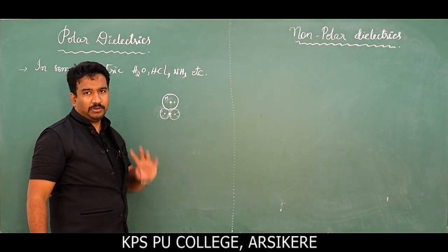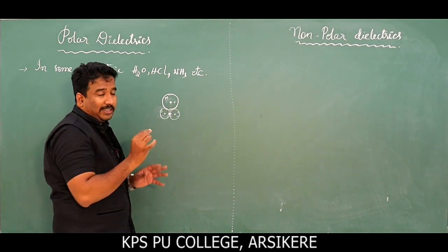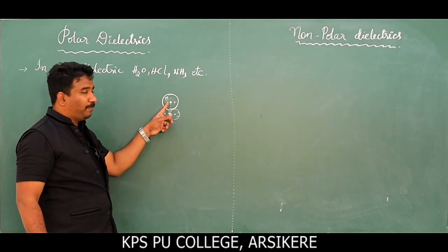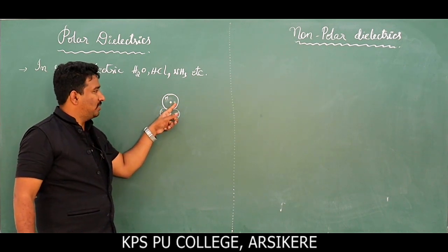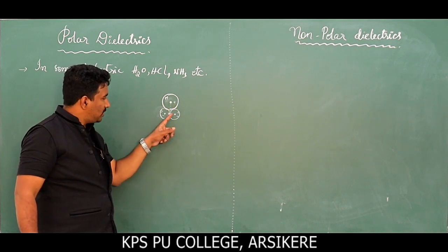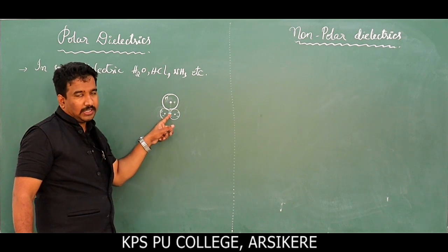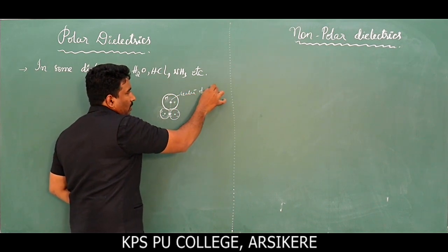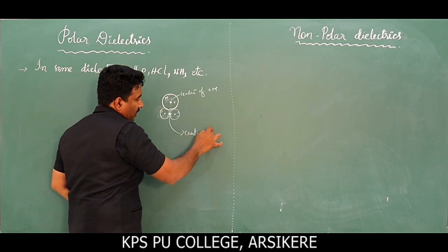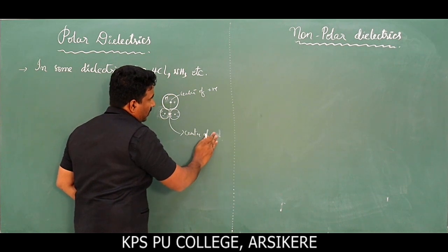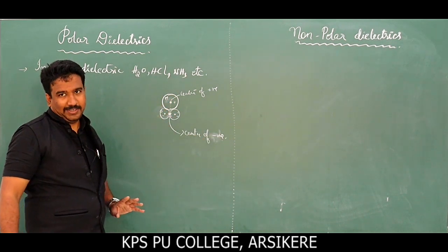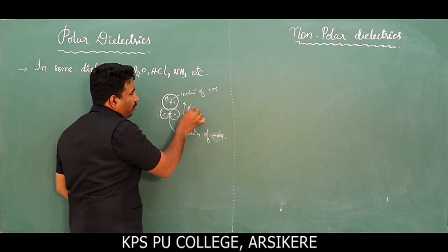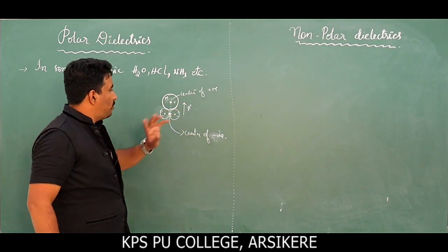There is a finite distance between them — positive and negative — because the center of positive charge is not coinciding with the center of negative charge. The hydrogen atom's center of mass is the center of positive charge, and the oxygen side is the center of negative charge. They are separated by a finite distance, and because of that, from the negative direction to positive direction, there will be a dipole moment.